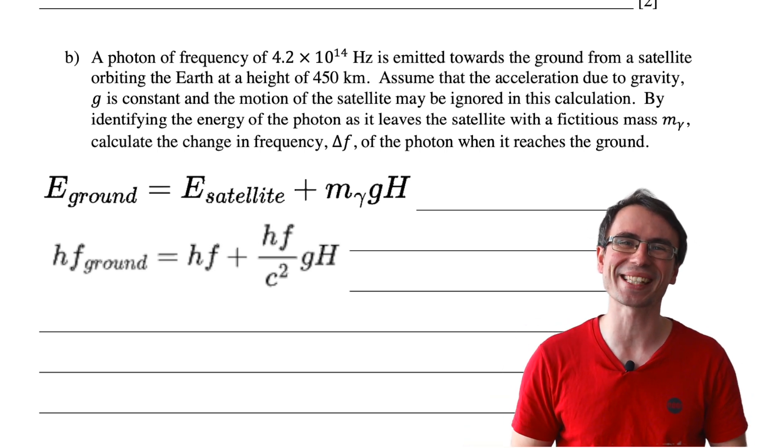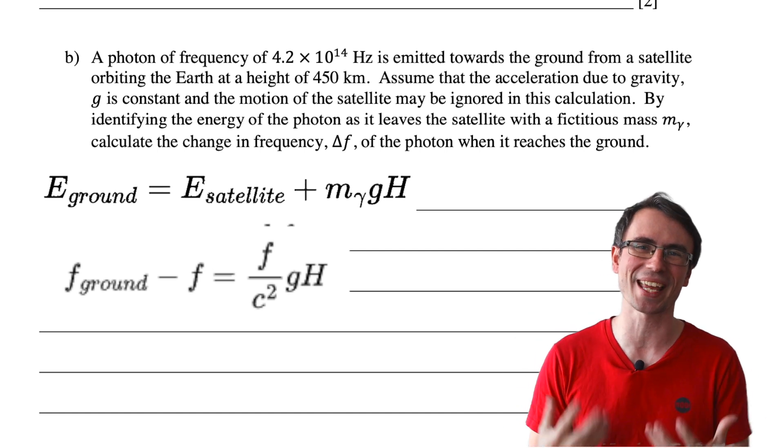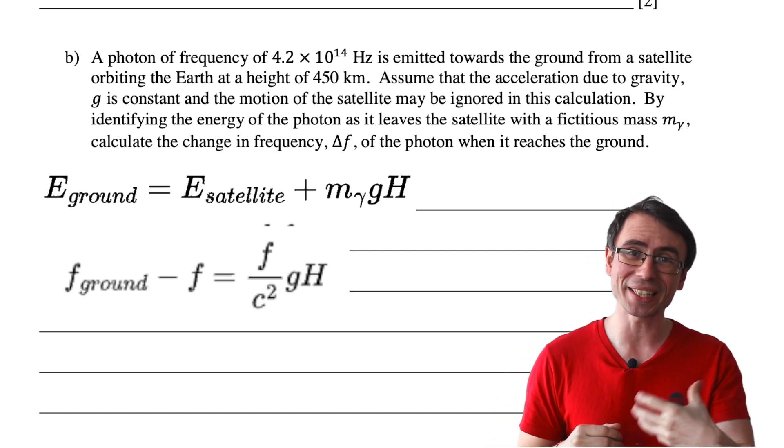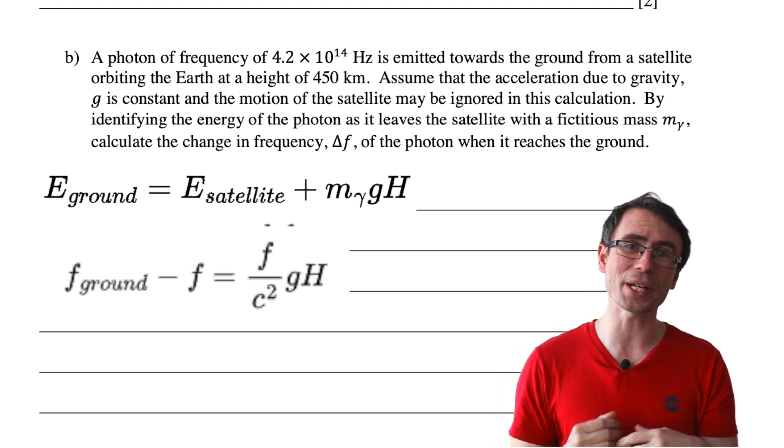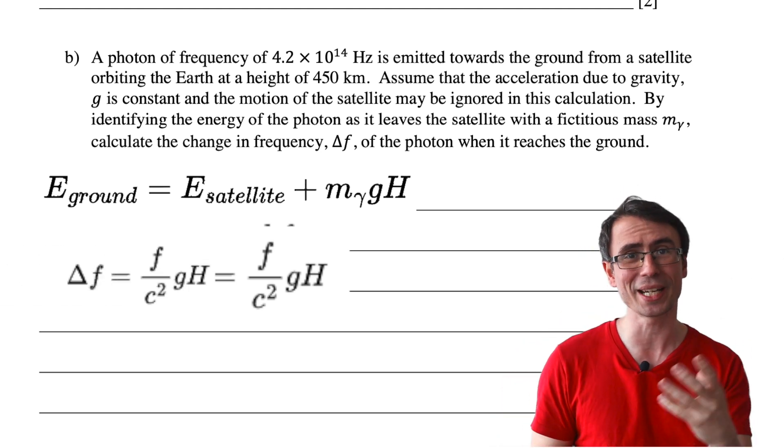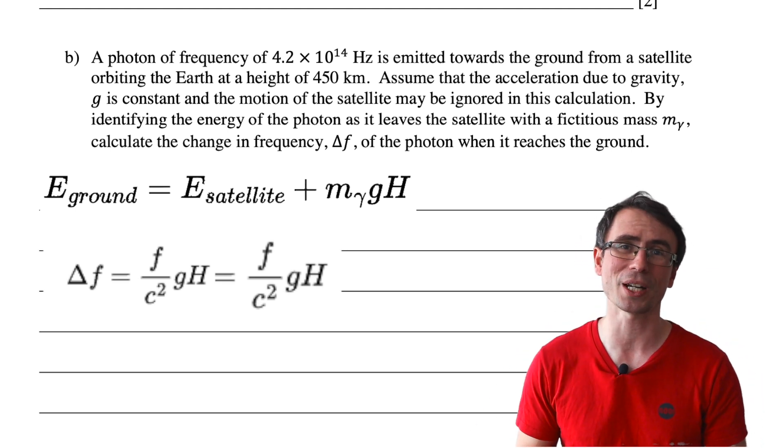And now we can do one of my favorite things in physics equations, which is to cancel things out. So we can get rid of Planck's constant h. And look at this, we can directly find the change in frequency by rearranging the terms. We get that the frequency on the ground level take away the frequency of the satellite, which is actually our Δf, is equal to this expression.